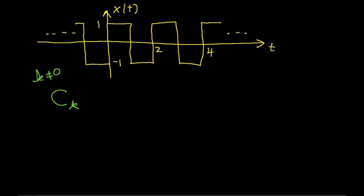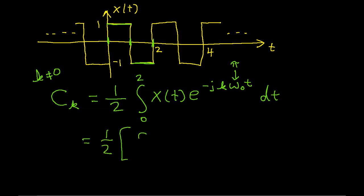Let's now compute C sub K for the case where K is not equal to 0. So you'll remember that C sub K is 1 over T0, which in our case is 2. So we have 1 over 2, the integral from 0 to 2, x of T, e to the minus j k omega 0 t dt. You'll remember that omega 0 is pi, so I'll start using that in just a minute. Because x has a value of 1 between t equals 0 to 1 and a value of negative 1 between t going from 1 to 2, I'll break this integral into two separate integrals. The integral from 0 to 1 of 1 times e to the minus j k pi t dt plus the integral from 1 to 2 of negative 1 e to the minus j k pi t dt.